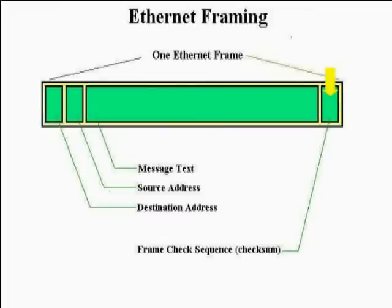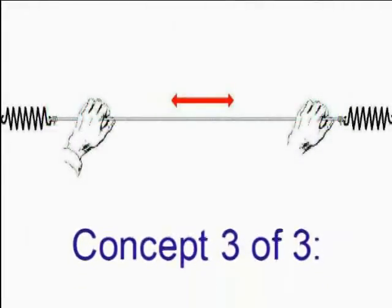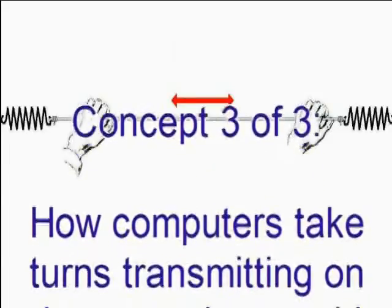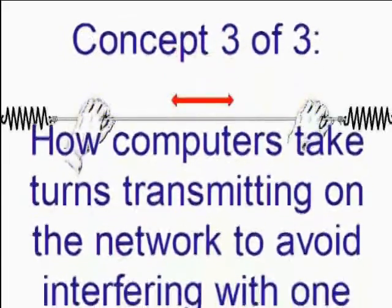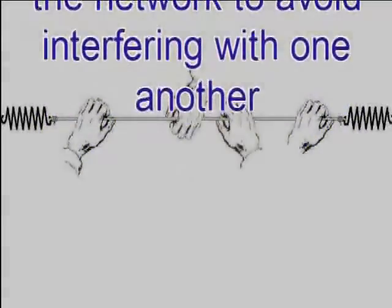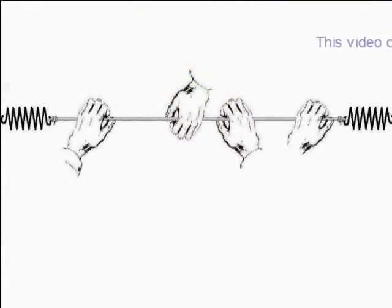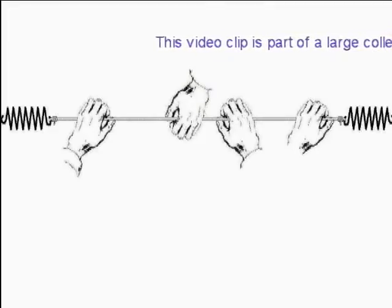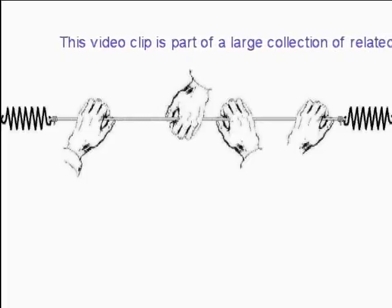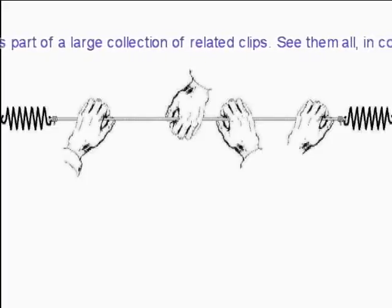Remember our discussion about how an Ethernet segment is a lot like a rope stretched between two springs? When only two people placed their hands on the rope, we called that a point-to-point network. We said that several people could place their hands on the rope and share it — let's call that a multipoint network. As you can imagine, it would be necessary for people participating in a multipoint network to be polite and share the rope, because if two people started pulling on the rope at exactly the same time, everybody would be confused and the messages would be garbled.